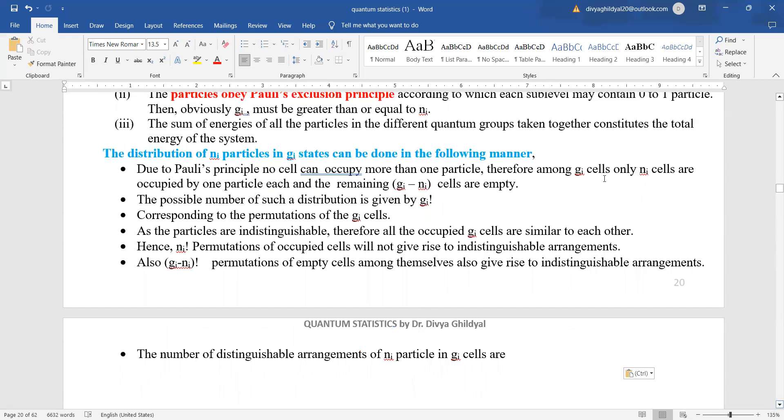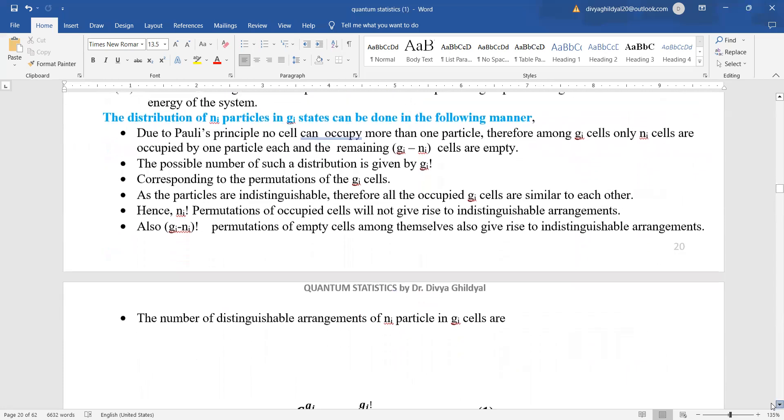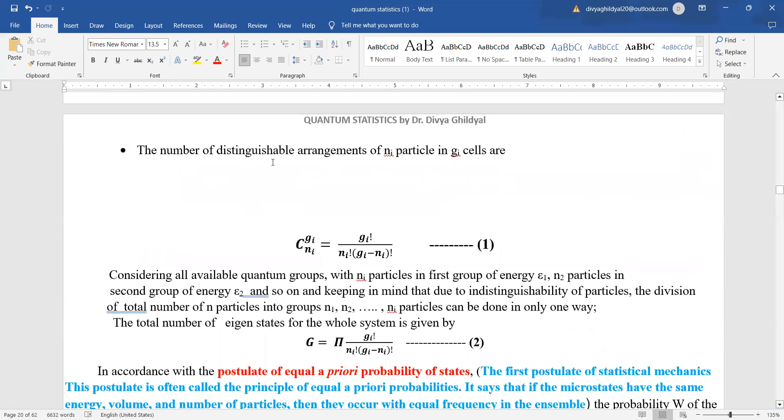Therefore, among gi cells only ni cells will be occupied by one particle each and the remaining gi minus ni cells are going to be empty. This way, we will now apply permutation formula and say that the number of distinguishable arrangements of the ni particles in gi cells will be gi factorial upon ni factorial into gi minus ni factorial from the formula.